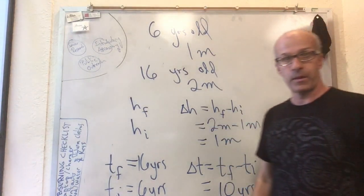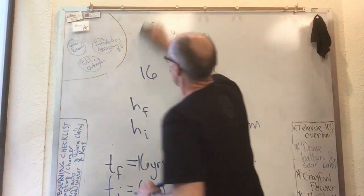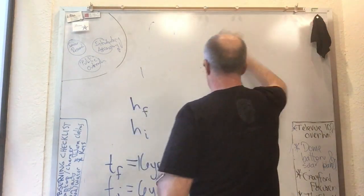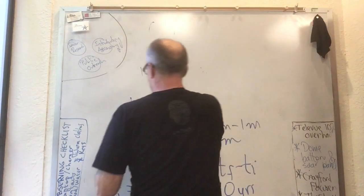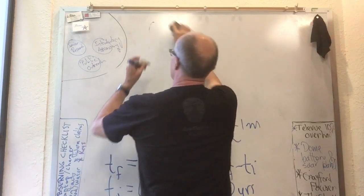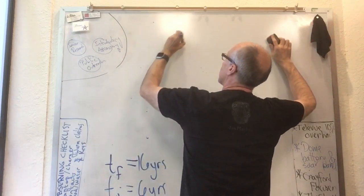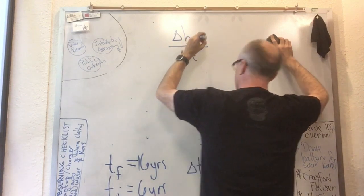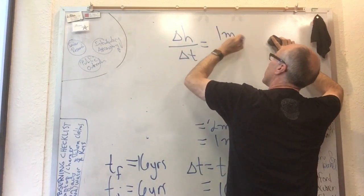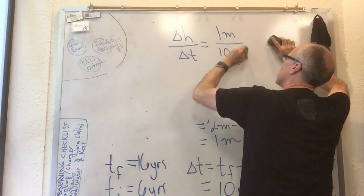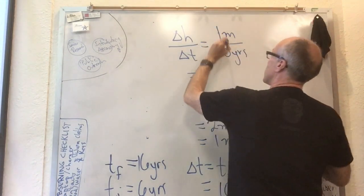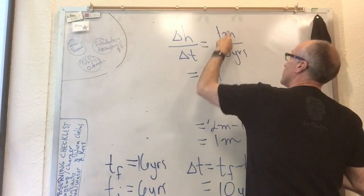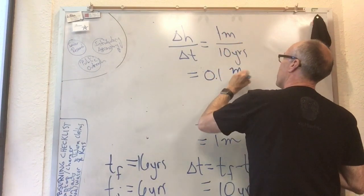Delta h is one meter and delta t is ten years, so that means we can talk about the rate of change of height. How do you get the rate of change of something? You take delta h and divide by delta t. We just calculated those two—that was one meter divided by ten years, which equals 0.1 meters per year.